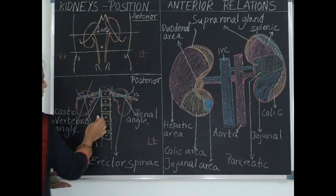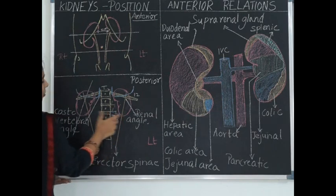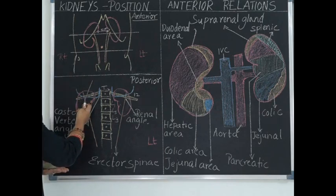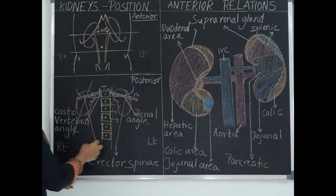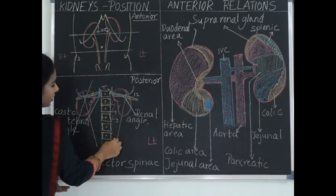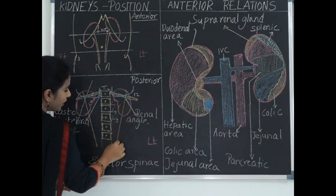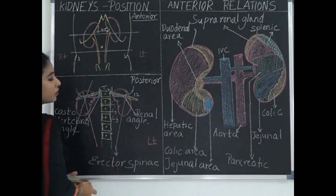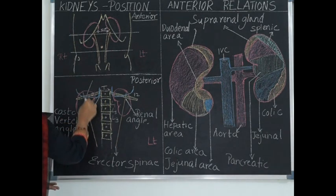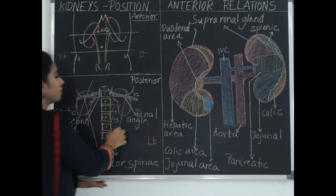From the posterior view, the kidneys extend from thoracic T12 to L3. The lower poles are located at the level of L3 and the superior poles at the level of T12. The right kidney, being slightly lower, is related posteriorly to the 12th rib. The left kidney, being slightly higher, is related to both the 12th and 11th ribs posteriorly. The 12th rib and the lateral border of the erector spinae muscle make an angle posteriorly called the renal angle, and medially the angle between the 12th rib and the lateral border of the vertebral line is called the costovertebral angle. These angles are important clinically.